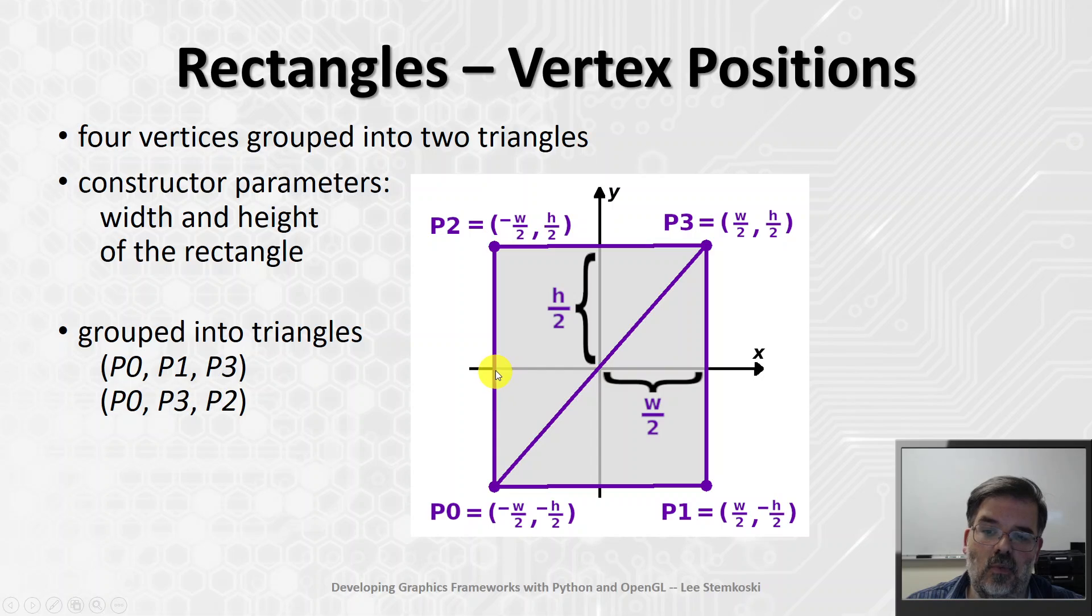And this is just on the xy axis. We'll assume that the z coordinate is always zero. Since the complete width is w, let's say, half the width is w over 2. So the x coordinates are either going to be positive w over 2, or negative w over 2. And again, centered at the origin. The y coordinates will therefore be half the height, h over 2, or negative half the height, negative h over 2. And so we'll have those two triangles.